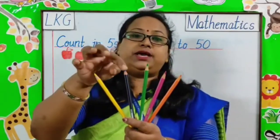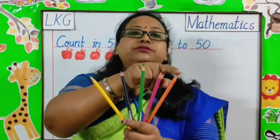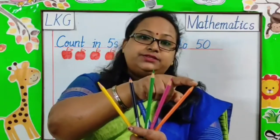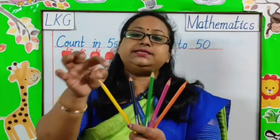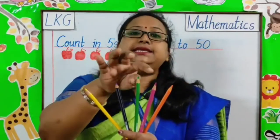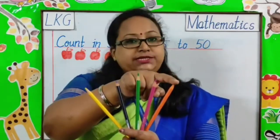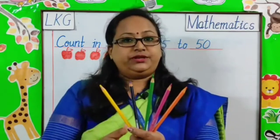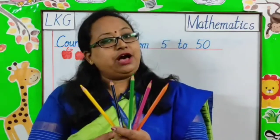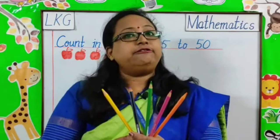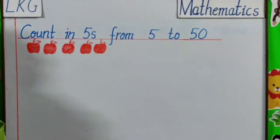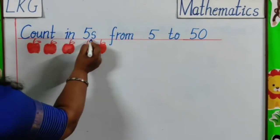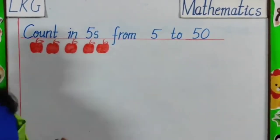After 10, 11, 12, 13, 14, 15. The next answer is 15. After 15, 16, 17, 18, 19 and 20. So, children, like this, you have to count in fives. Let's count in fives from 5 to 50.